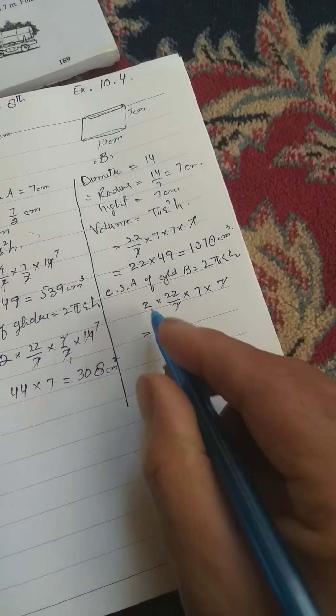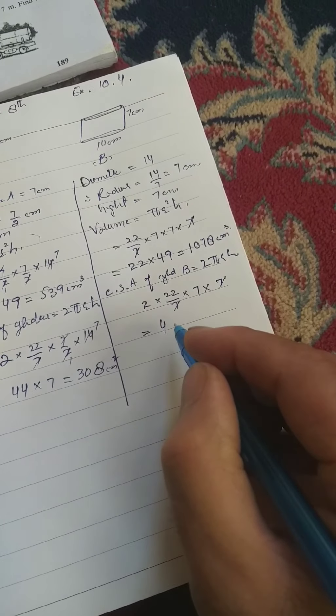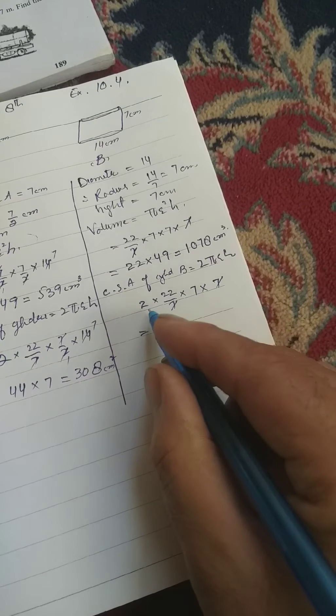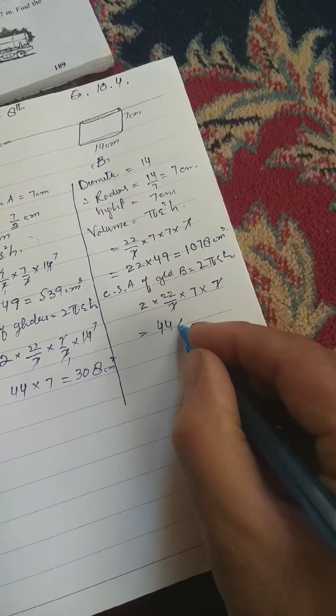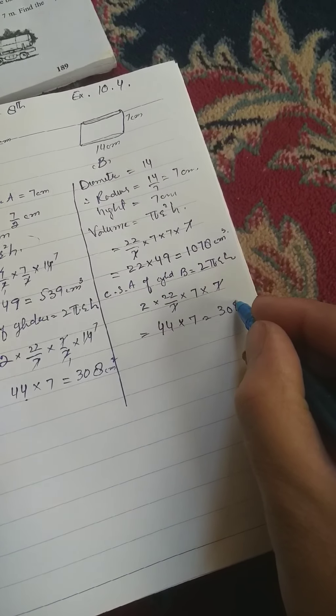This is 7 and this is 7 cancel. 2, 2 to the 4, 2, 2 to the 4, 2 to the 4, 2 to the 4 into 7, same, 308 centimeter.